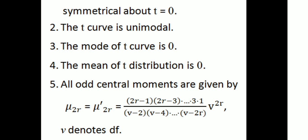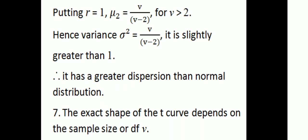The mean of the t-distribution is 0. All central moments are given by μ₂ᵣ = (2r-1)(2r-3)···3·1 / (v-2)(v-4)···(v-2r) · vʳ where v denotes degrees of freedom. Putting r=1, μ₂ = v/(v-2) for v > 2. Hence variance σ² = v/(v-2), which is greater than 1. Therefore, t-distribution has greater dispersion than the normal distribution.